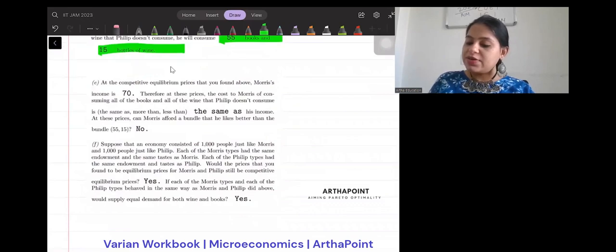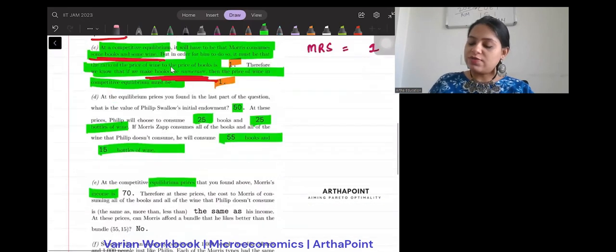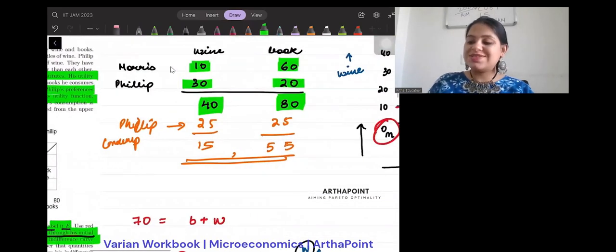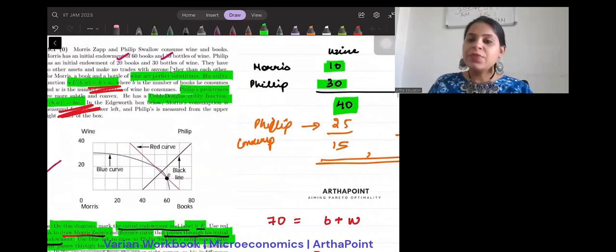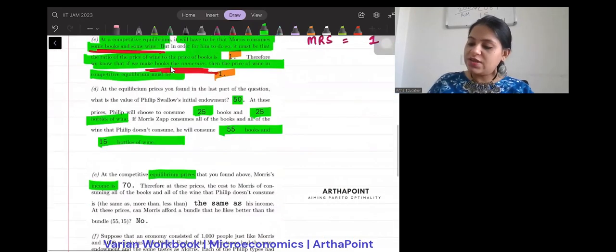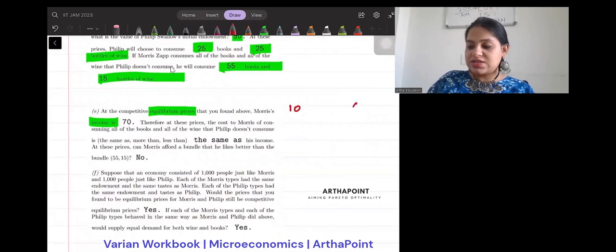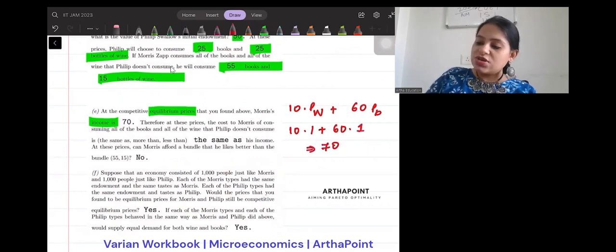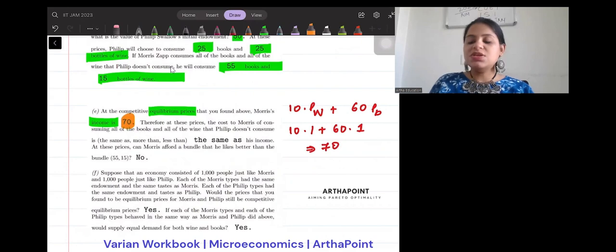Let's go to the next question. At competitive equilibrium price, you found above Morris income is. So, how can we find the income of Morris? So, Morris endowment bundle was 10, 60. 10 wine and 60 books. So, how can we find the income of Morris? 10 and 60 into. So, 10 units of wine. So, price of wine into price of book. So, 10 into 1 plus 60 into 1. That is going to be 70. So, his income is going to be 70.